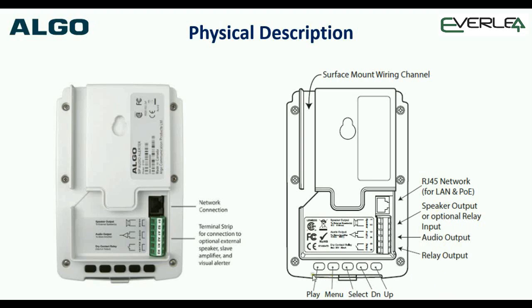These little buttons down the bottom make the Algo really nice to install. You can play the ringtone and adjust the volume manually if you're next to the unit, or control that via the browser for programming. One key thing: once you plug this into the network, it's a DHCP deployment by default. To find the IP address, there's software called the Algo Locator that will scan the entire network and find all Algo products and give you their IP addresses.